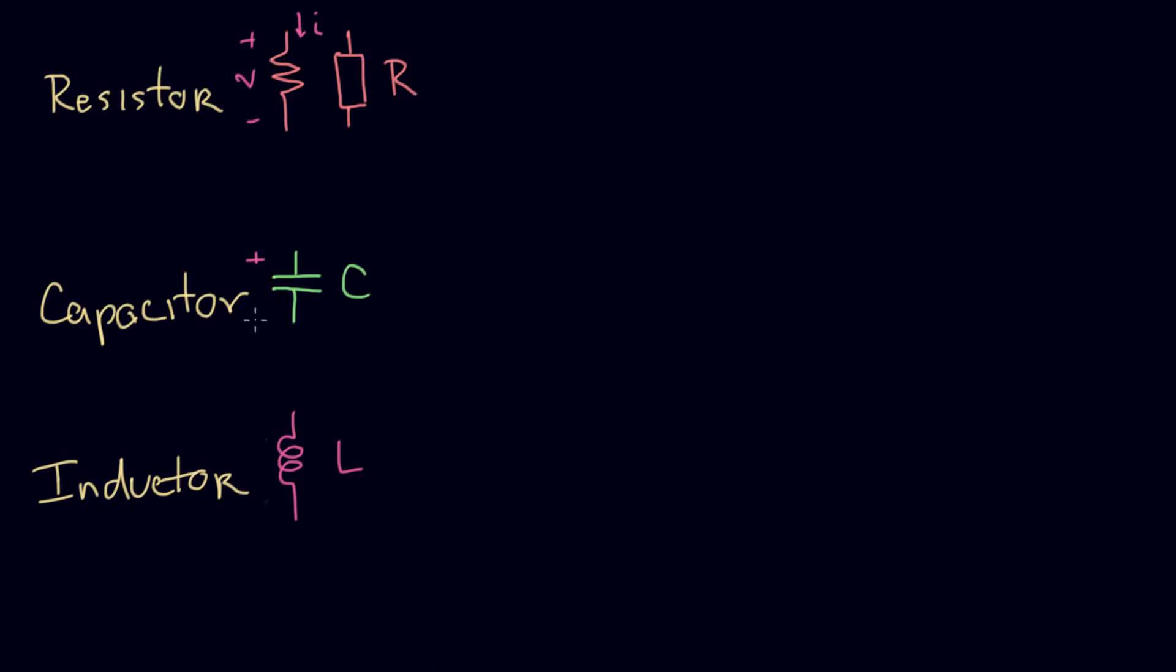The current goes into the positive terminal. The current goes into the positive terminal. So that's V on the capacitor. And finally, the current goes in. And we're going to be very consistent about this, and that's going to keep us from making mistakes.